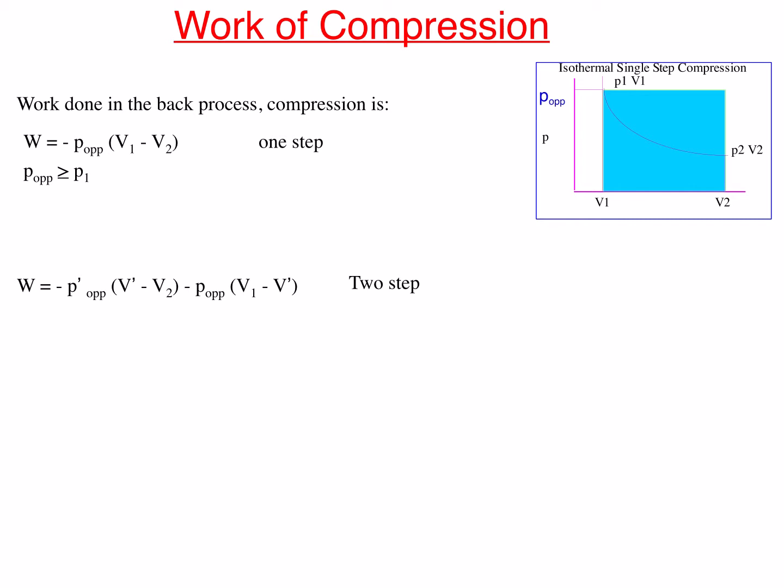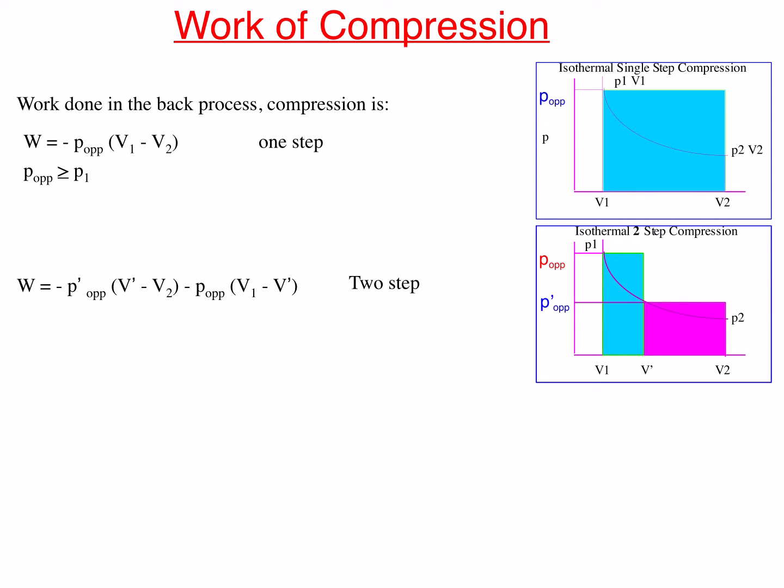This is a two-step compression with an intermediate stage as shown in the diagram. We start with volume V2 and compress it with P prime opposing to volume V prime, then from V prime we compress further in the second step back to V1. The purple rectangle corresponds to the work of compression during the first step; the blue rectangle corresponds to the work of compression in the second step. The total work is the sum of the areas of the two rectangles.